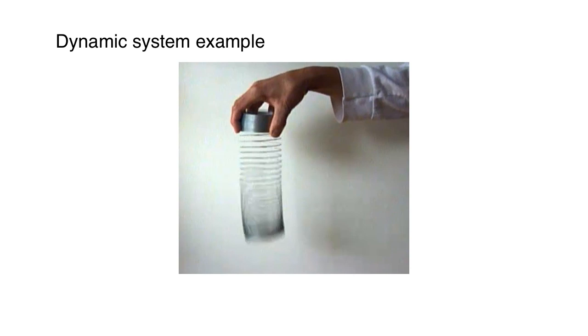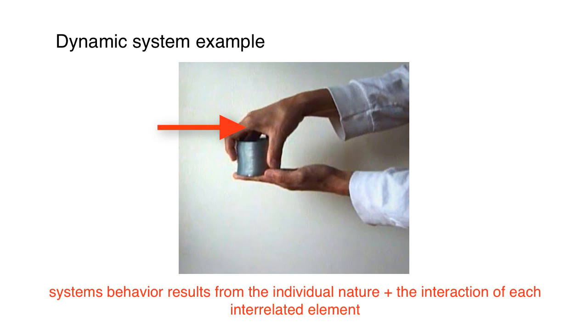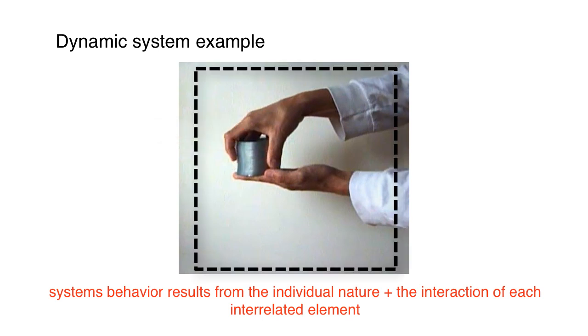My question is, what causes the slinky to behave the way it did? Is it the hand at the bottom that moved so that the slinky could drop from gravity? Is it gravity? Is it something about the spring itself? Is it the hand at the top? In a systems view, you'd say it's everything working together that's causing the system to function as it's functioning.